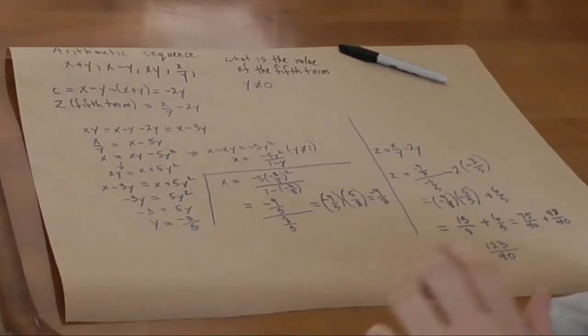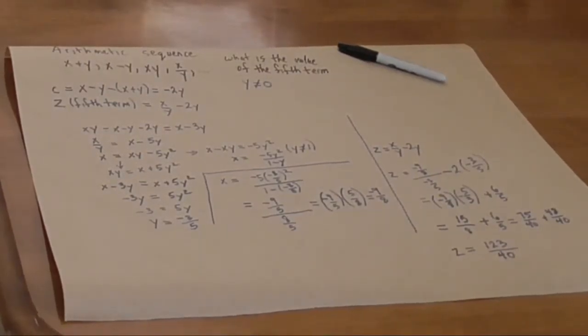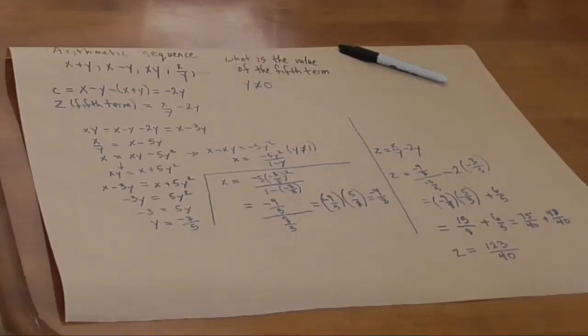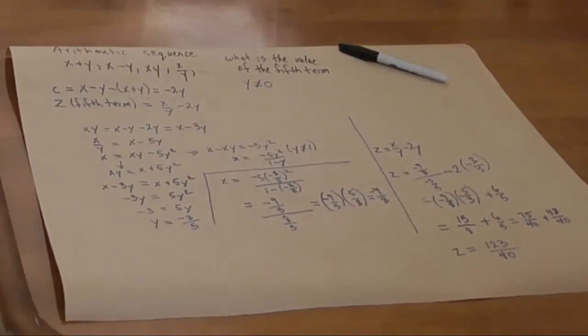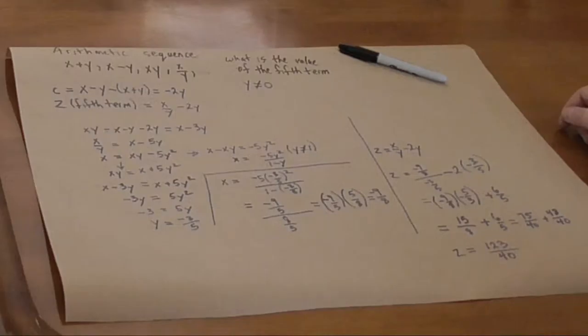So, that means the fifth term of that sequence is 123 over 40. We know x and y now. So, we could calculate the other terms. I'm not going to, but it's a good exercise to verify that your answer makes sense. If you calculate the four existing terms there, you can easily identify that this does work. Note that this 6 over 5 or 48 over 40 is our common difference. And the x over y term is 75 over 40. So, you can actually work backwards on that and come up with the rest of them to make sure that your difference actually works.